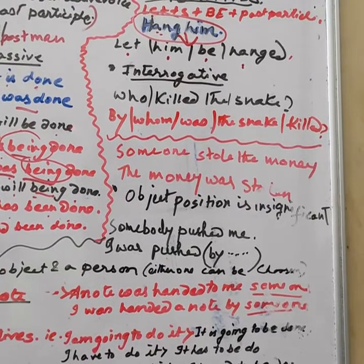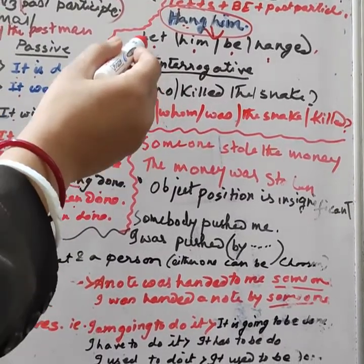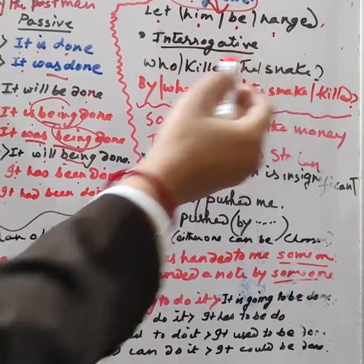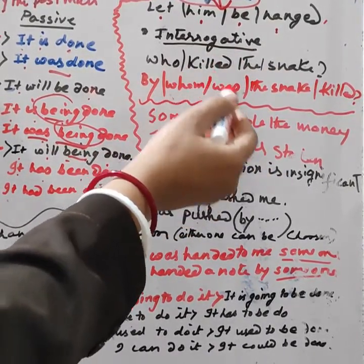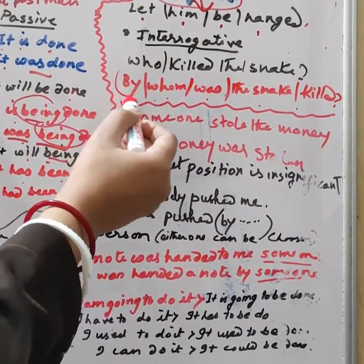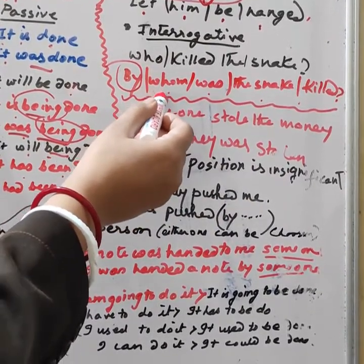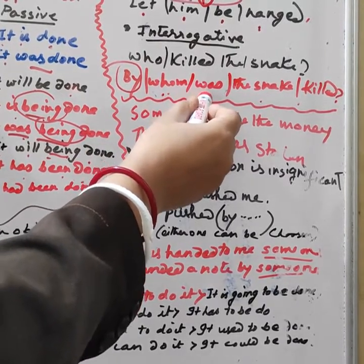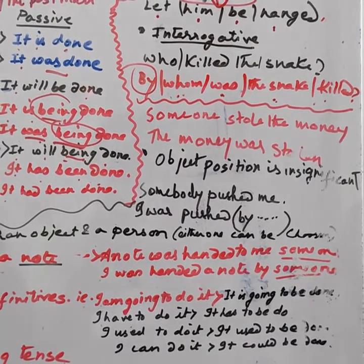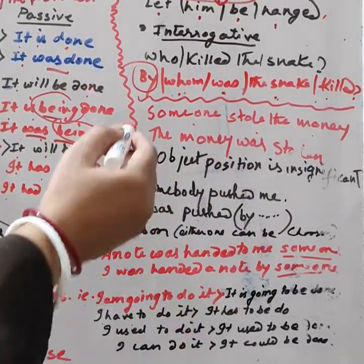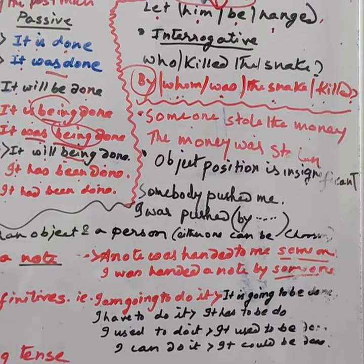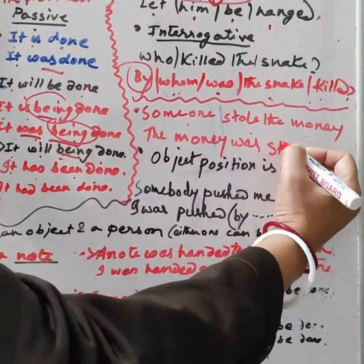Then interrogative sentences — sentences that convey the sense of questioning. 'Who killed the snake?' In passive voice, this becomes: 'By whom was the snake killed?' 'By' is placed at the beginning, then 'whom,' then the verb to be, then the object, then the verb. Another special case: 'Someone stole the money' — the passive is 'The money was stolen.'